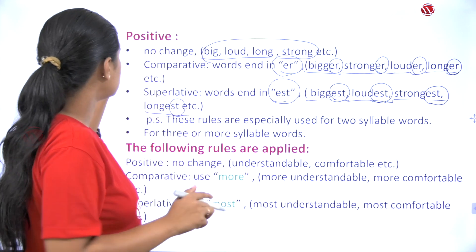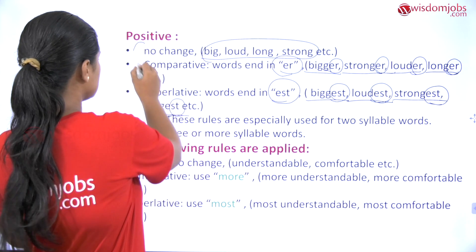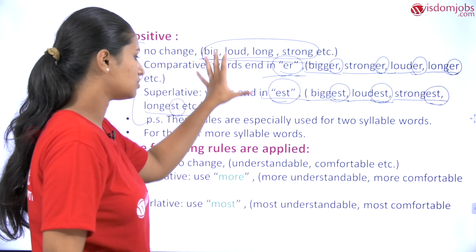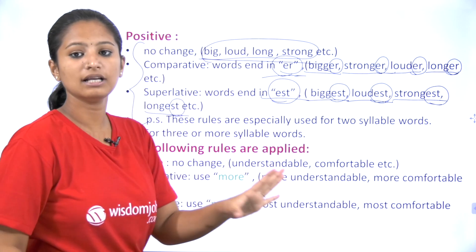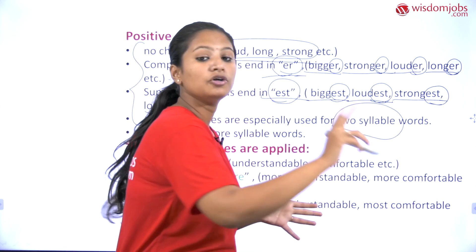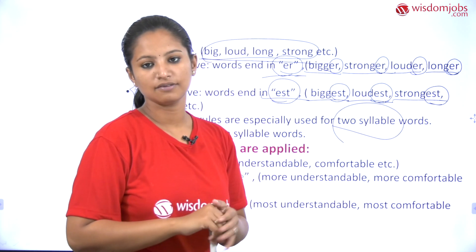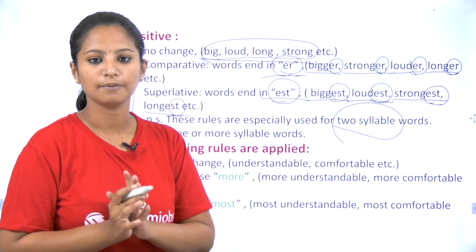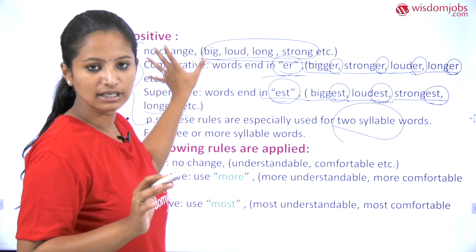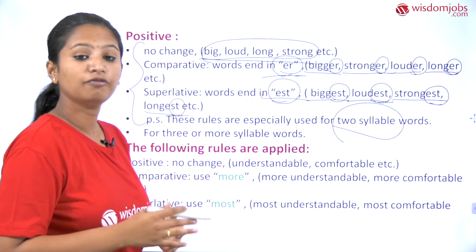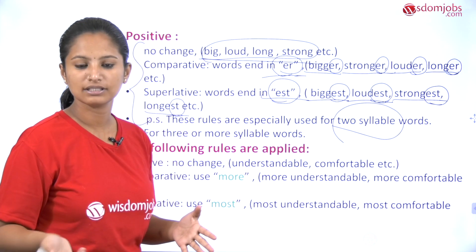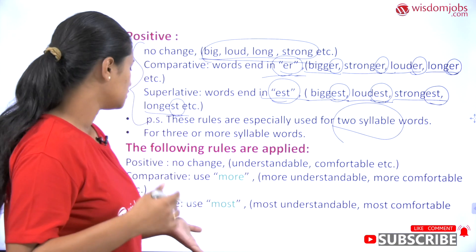Now, where are these rules — '-er', '-est', and the no-change rule — applicable? These rules are especially applicable only when words contain up to two syllables. For words which contain three or more syllables, we follow a different set of rules.